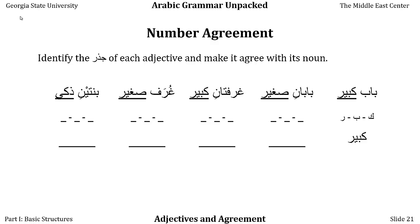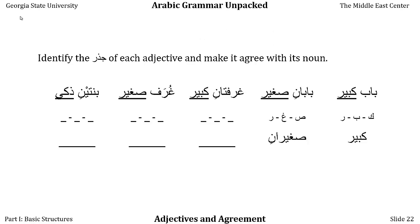In the second example, we have baban — two doors — and the adjective saghir, which means small. We don't use the number two to count a noun; instead we use the dual ending, which here is -an. The jidhr for saghir is sin-ghain-ra. If we're going to say baban, two doors, we have to make the adjective saghiran: two small doors.